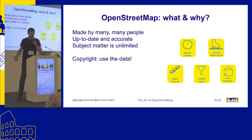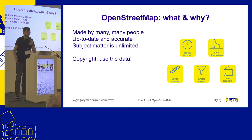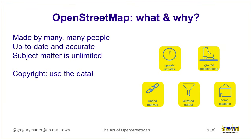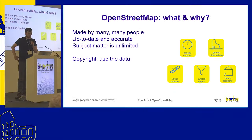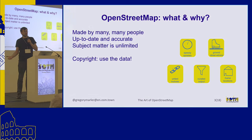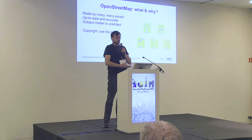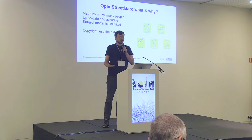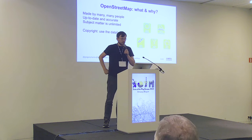Of course, I always have to talk about what and why OpenStreetMap is. I won't give you that full talk because hopefully you know if you're at State of the Map, but it's a project that's made by many, many people. It's up-to-date and accurate, which is good for a map data source, and its subjects are unlimited - you've got all these different people mapping things like cycle routes, outdoor art sculptures, footpaths, or railways.